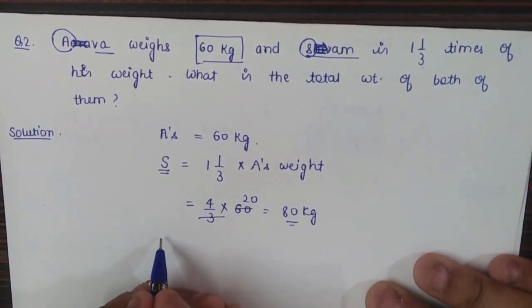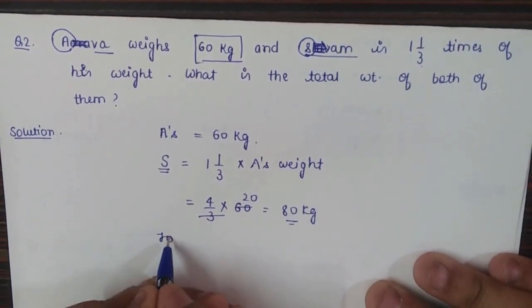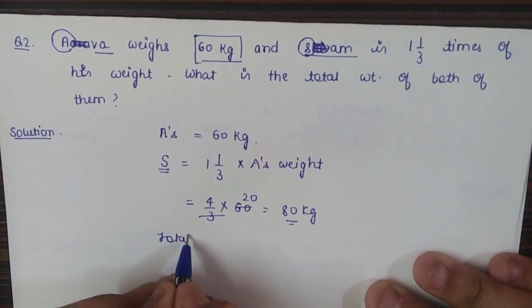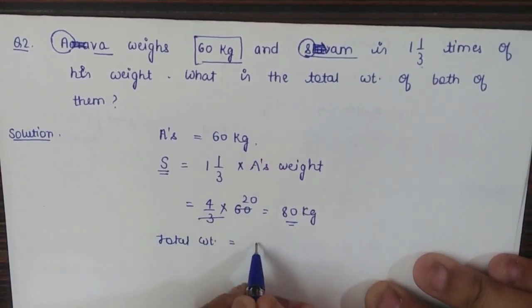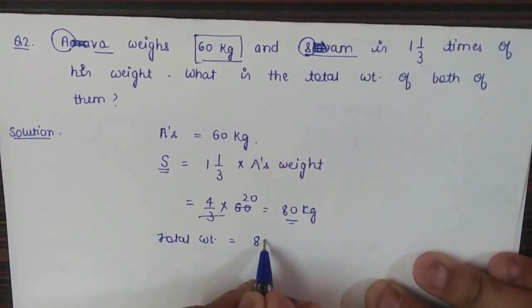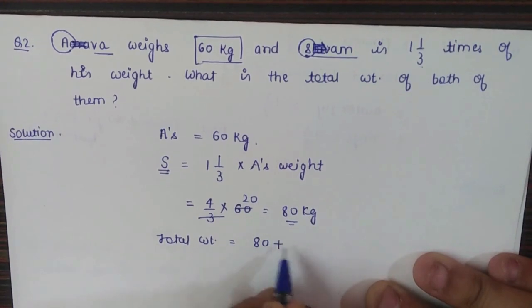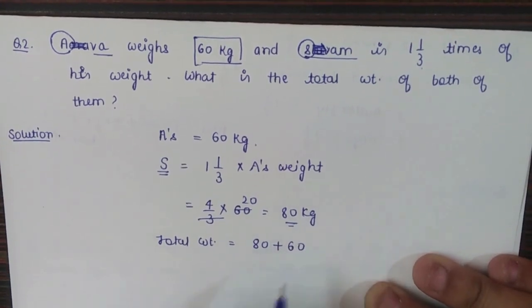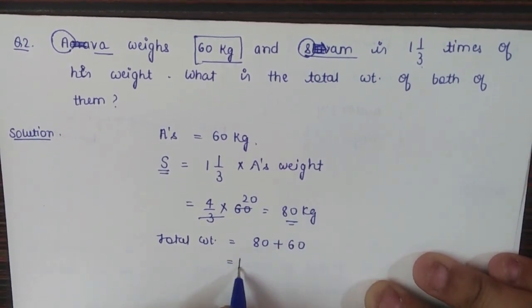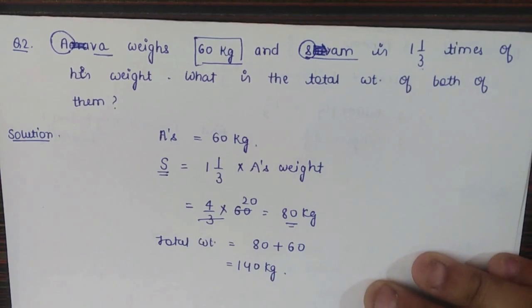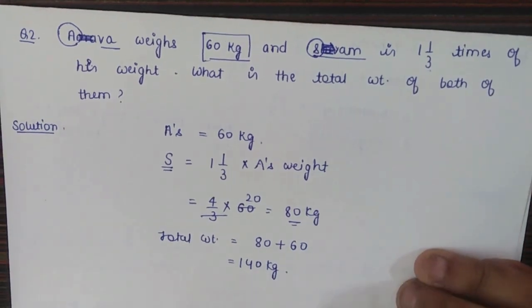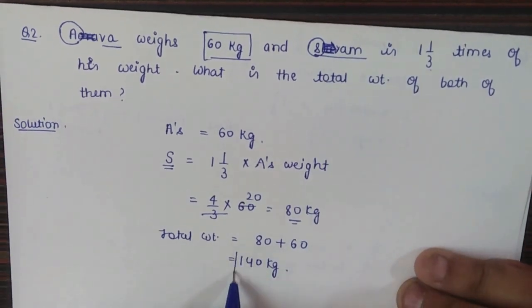The total weight of both of them is found by simple addition: 80 plus 60 equals 140 kilograms. So the answer for question two is 140 kg.